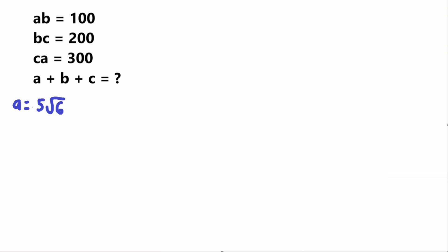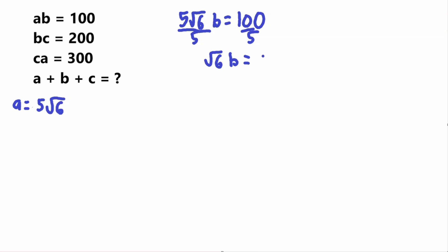Now that we know A equals 5√6, we can use it in the equations to find B and C. From A times B equals 100: 5√6 times B equals 100. Dividing by 5 gives √6 times B equals 20, then dividing by √6 gives B equals 20 over √6.